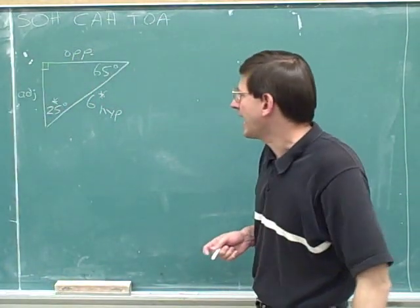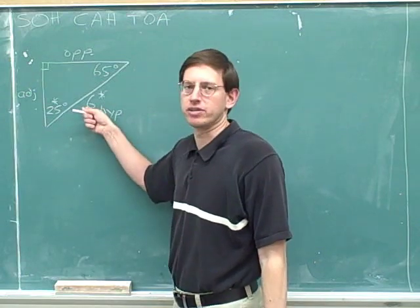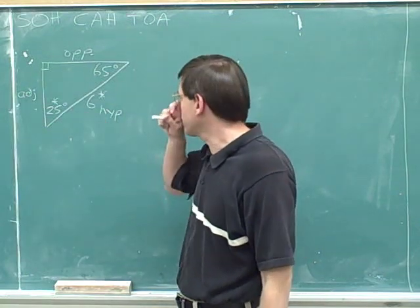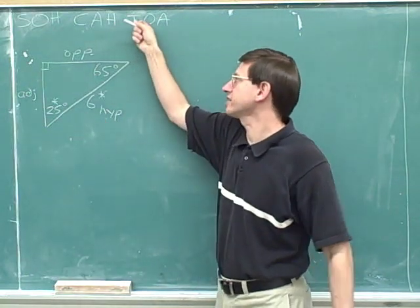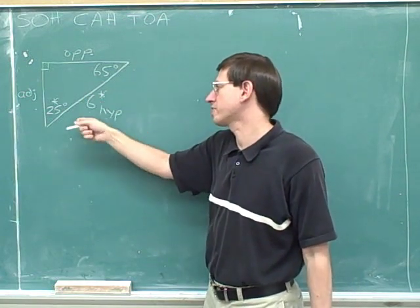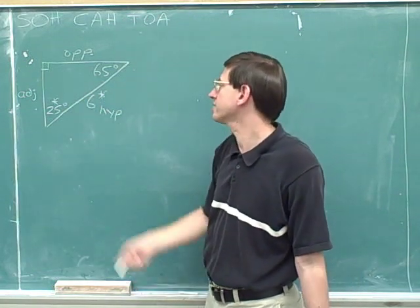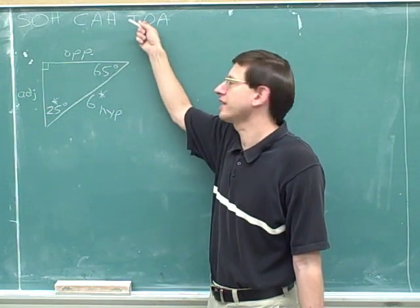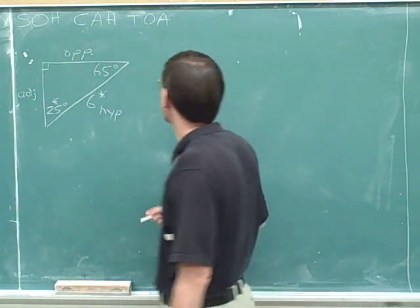We're going to try to figure stuff out using the hypotenuse, so the one thing we can't use is the tangent, because the tangent doesn't involve the hypotenuse. This asterisk reminds me that I'm going to try to use the number 6 to figure things out. I can't work with the tangent because that doesn't refer to the hypotenuse.